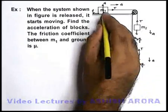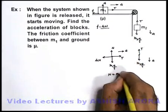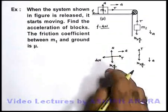Here we can say in vertical direction this block is not in motion, so we can write N is equal to m1g, as the forces are balanced.